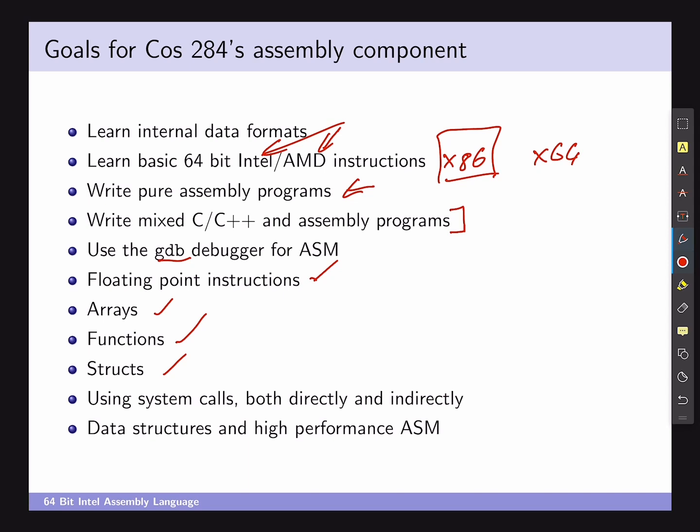We're also going to talk about using system calls, both directly and indirectly. From the start you'll be using simple system calls to output to the screen, and later we'll go through more complicated system calls and distinguish between system calls for different operating systems. Then to round things off, we're going to go through data structures in assembler — linked lists, trees, binary search trees, simple hash tables and graphs. It won't be to the extent of COS212, but we'll be building some interesting structures nonetheless.